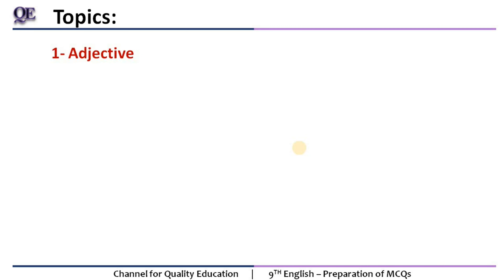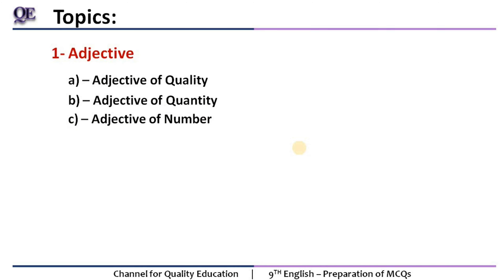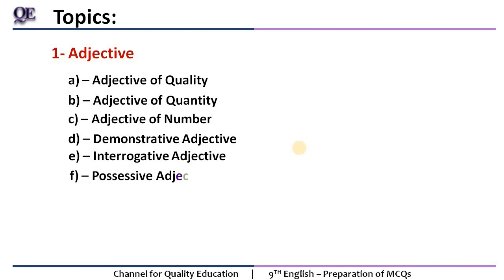Number one topic is adjective. We will discuss adjective of quality, quantity, number, demonstrative adjective, interrogative adjective, and possessive adjective — these are the six kinds of adjectives. You may have studied many types, but in the exam there can be confusion, so the best approach is to look at questions practically and understand which kind of adjective it is.